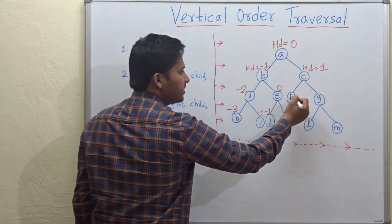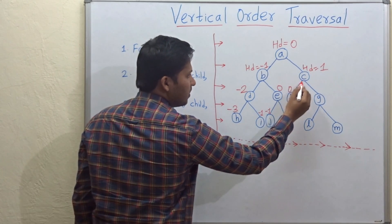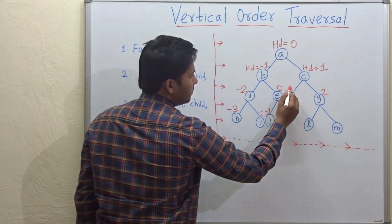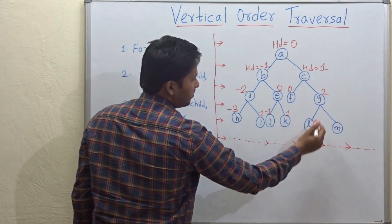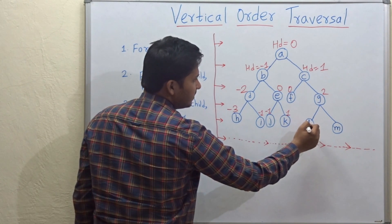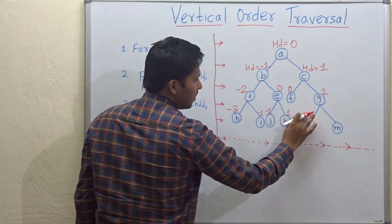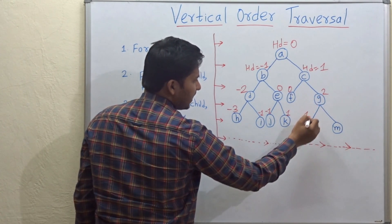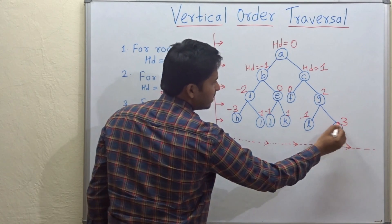The left child of c is f, so 1 minus 1 is 0. Right child is g, so 1 plus 1 is 2. For g, the left child l gives 2 minus 1 is 1, and the right child m gives 2 plus 1 is 3.